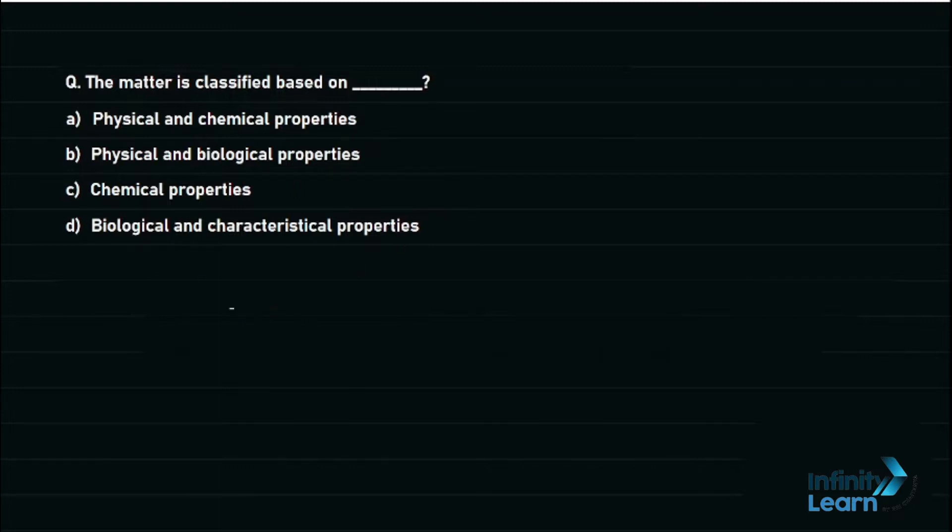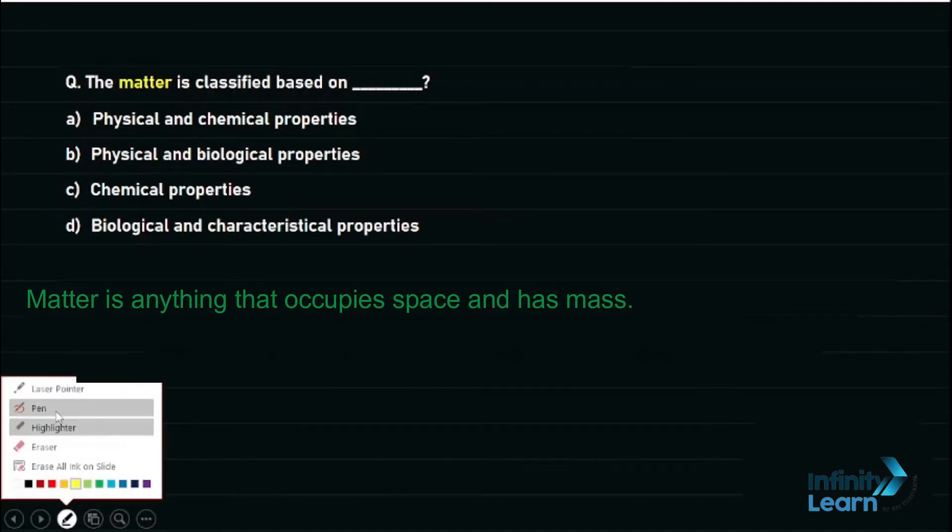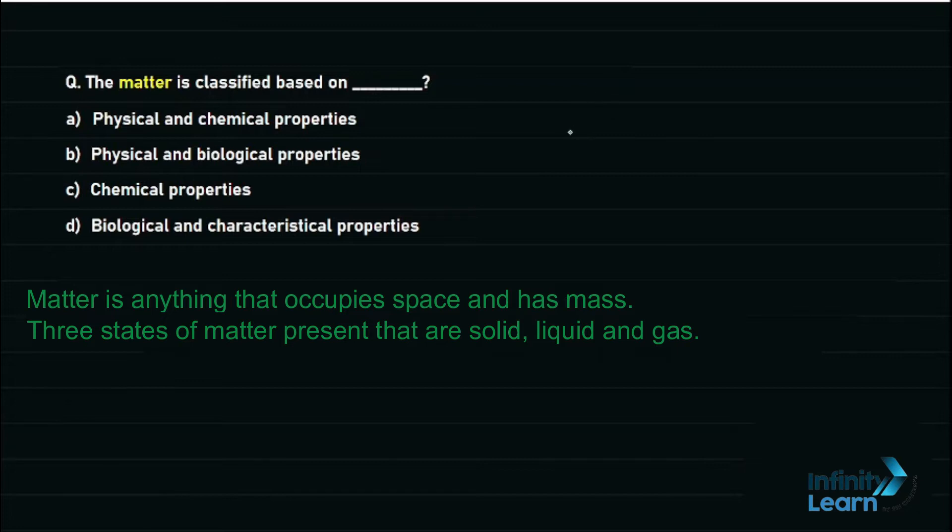Before coming to the options, let us first discuss what we understand by matter. Matter is anything that occupies space and has mass, and there are mainly three types of states that we have: solid, liquid, and gas.